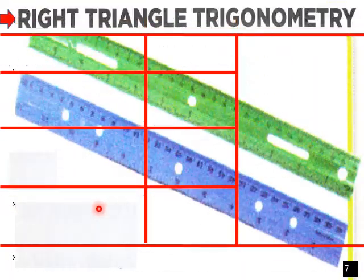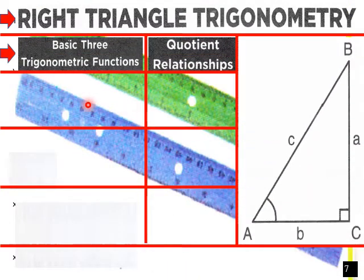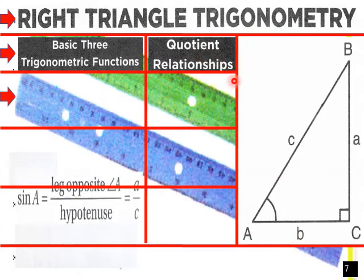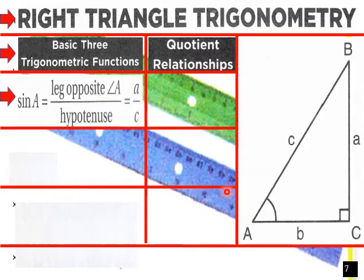Using the table: right triangle trigonometry, basic three trigonometric functions. Here's a right triangle and quotient relationships. For sine A, that's the leg opposite angle A over the hypotenuse — so it would be a over c.